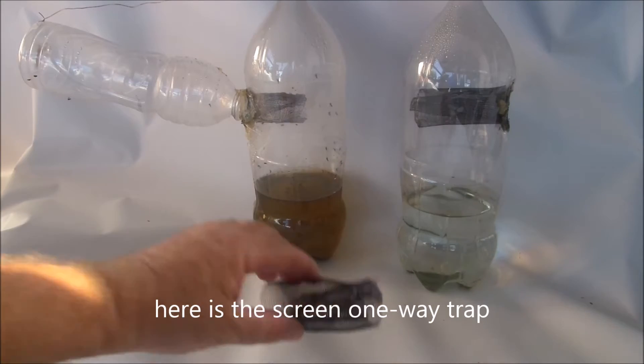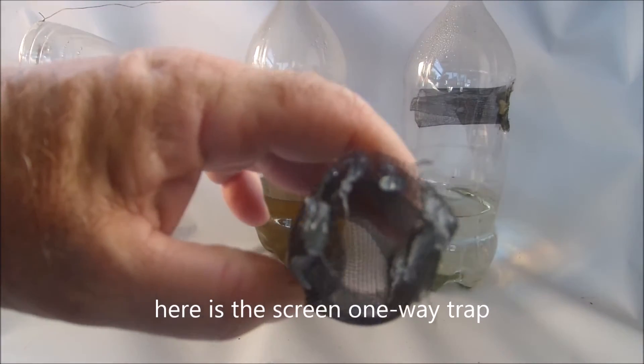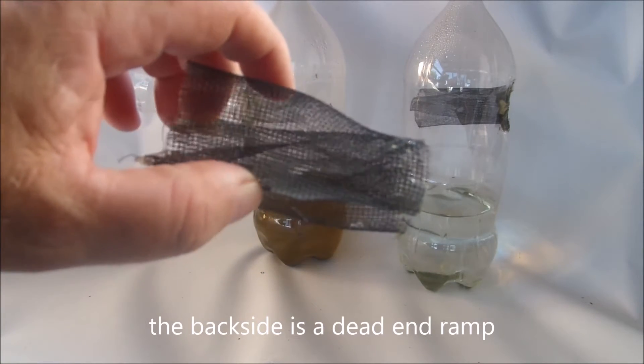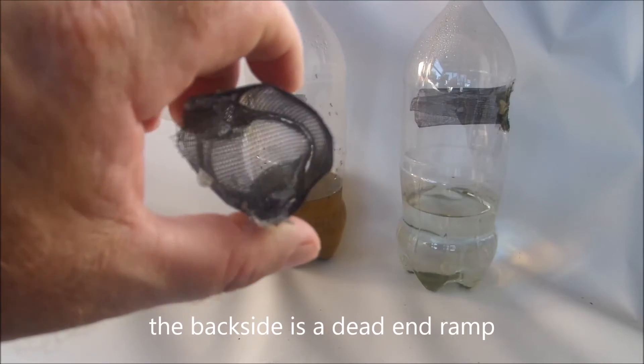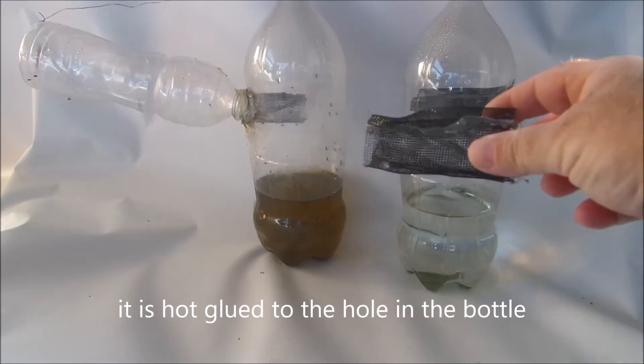You can see this example. Here's a screen that I made. It's a specially designed screen that has an opening in the back, so she flies in, walks up the ramp, flies into the bottle, lays eggs, and then she can't figure out how to get back out.